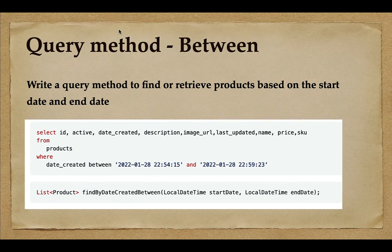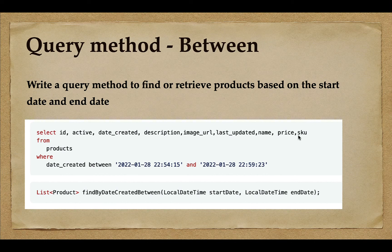In this lecture, I want to create a query method that uses the Between predicate keyword to find or retrieve products based on a date range — that is, we pass a start date and end date to the Between condition. This is essentially a query method to find products based on start date and end date, and here you can see the SELECT SQL query that Spring Data JPA behind the scenes creates using Hibernate for this query method.